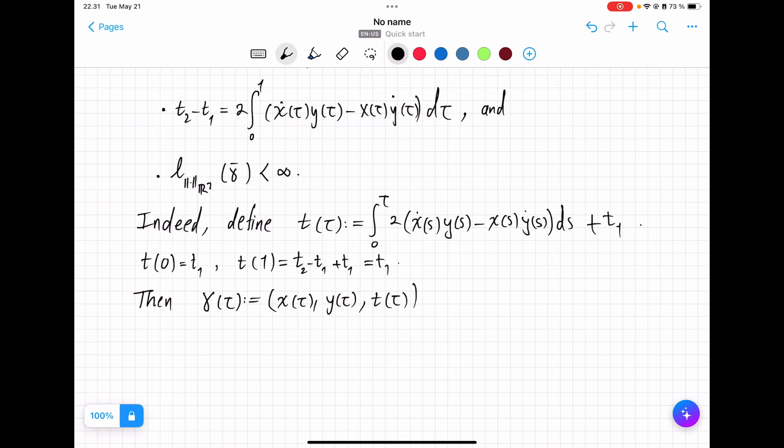So, then this guy is horizontal by previous theorem. If you take derivative, you will see that T prime is equal to this quantity almost everywhere,